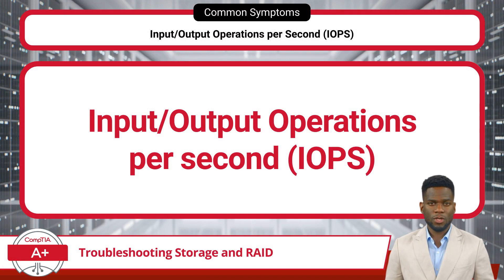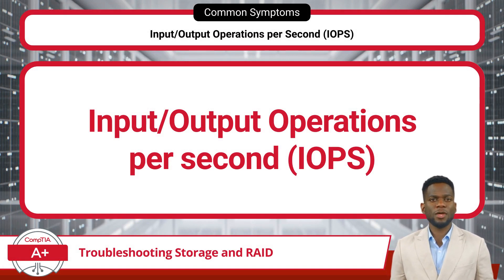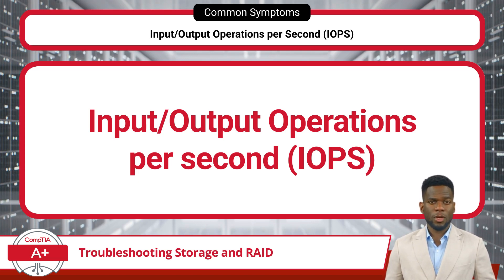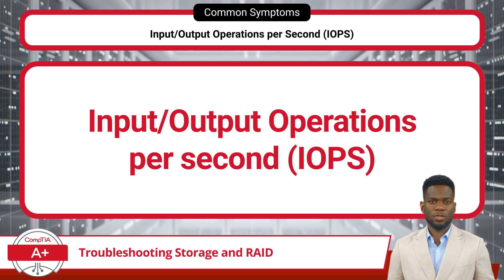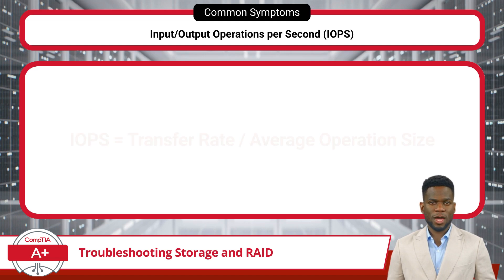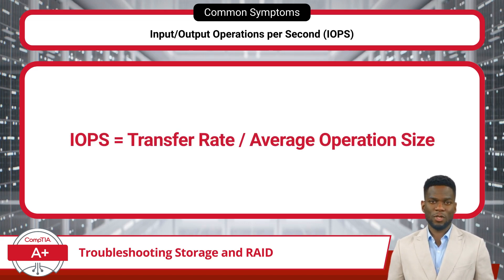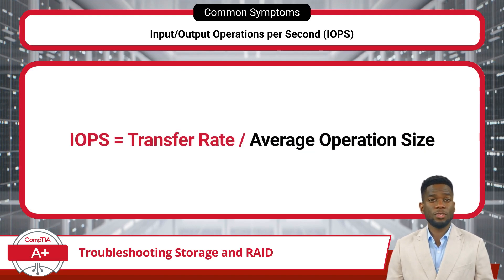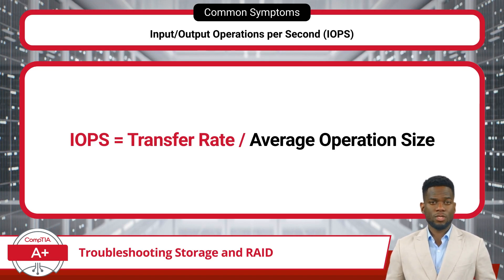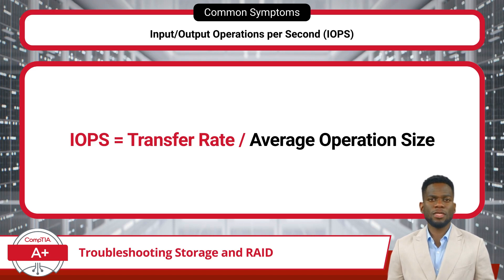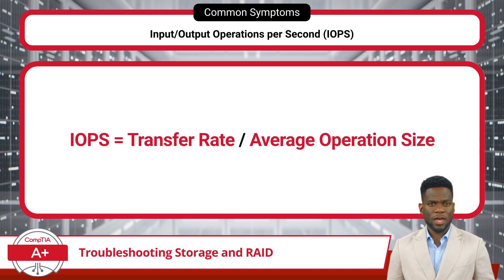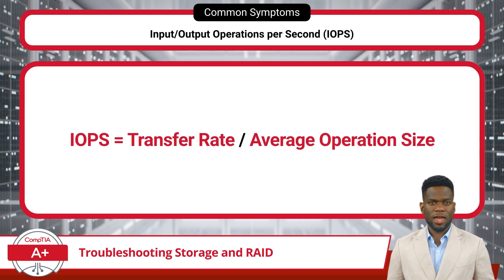We can measure a storage drive's read and write performance based on its IOPs metric. IOPs stands for Input-Output Operations Per Second and measures the number of read and write operations a storage device can handle in one second. Calculating IOPs involves two parts: the average size of each operation and the storage drive's transfer rate. The average operation size is typically measured in bytes, and the transfer rate represents the amount of data read from or written to the device per second. To calculate IOPs, take the transfer rate and divide it by the average operation size.